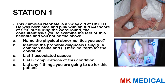Station 1. This neonate is a two-day-old at Levy Mwanawasa University Teaching Hospital. He was born nice and pink with an APGAR score of 9 out of 10. During the ward round, the consultant asks you to examine the feet of the neonate. You notice the above. Name the physical abnormalities you see. Mention the probable diagnosis using: A, a common term; B, a medical term for the condition; C, list three associated causes; D, list three complications of this condition; E, list any four things you're going to do for this patient.